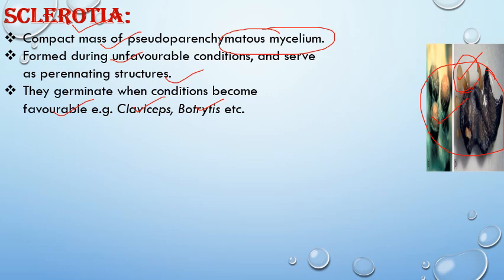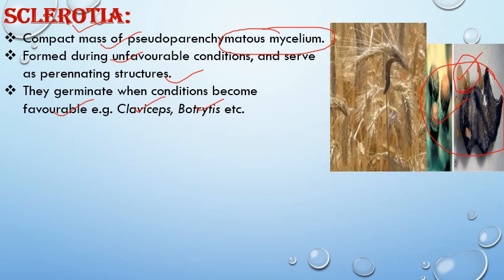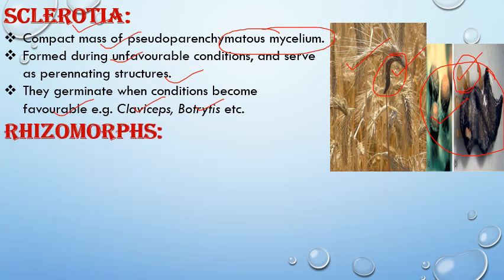Claviceps purpurea produces a disease known as ergot of rye. As seen in this picture, the black-colored structure is the sclerotia, which gives rise to new fungal thallus under favorable conditions. These structures are produced under harsh conditions.